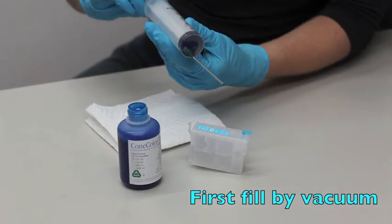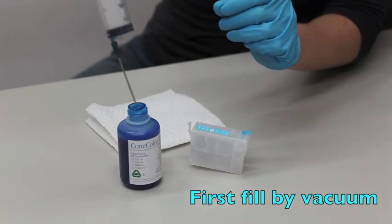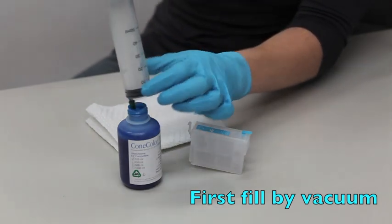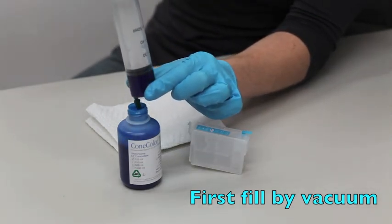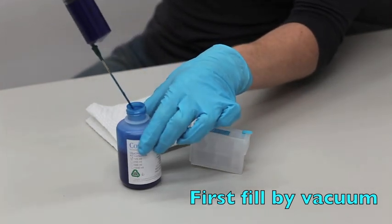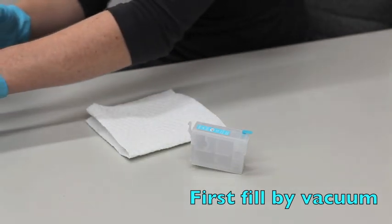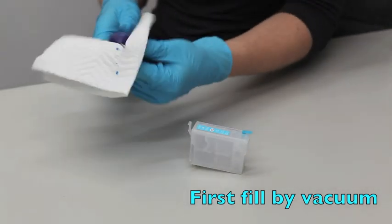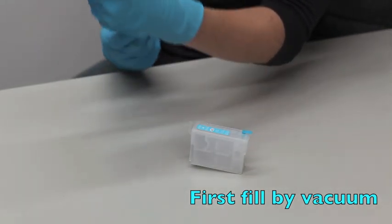Next, using the syringe with blunt tip needle attached, I'm going to draw about 30 milliliters of ink into the syringe. And I'm going to remove the needle from the syringe.